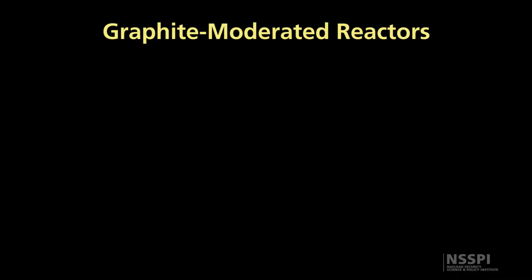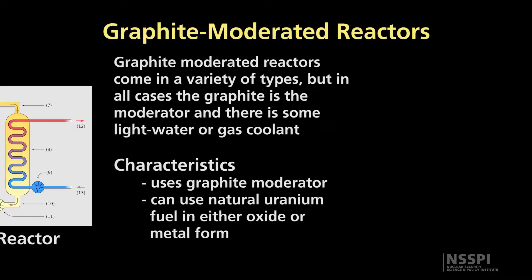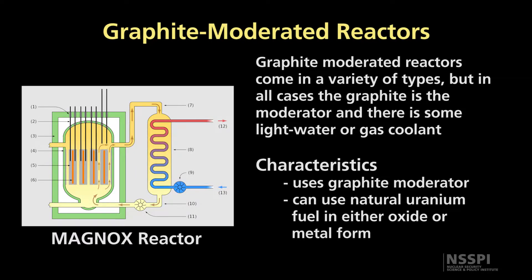Another type of reactor which you will not see very many of, but used to exist in large numbers, is graphite moderated reactors. In this case, the reactor uses a solid graphite moderator that moderates the neutrons. Since graphite also absorbs very few neutrons compared to light water, this system can also use a natural uranium fuel in either oxide or metallic form. What's shown here is the Magnox reactor from Great Britain, which uses a metallic uranium fuel, usually in a uranium alloy.